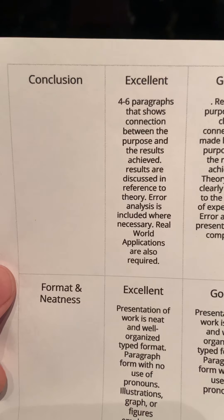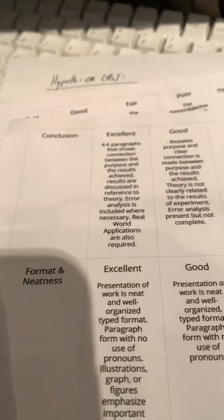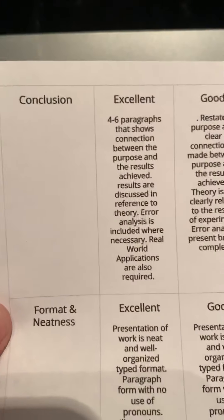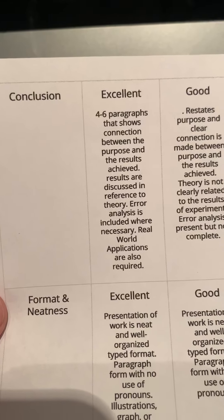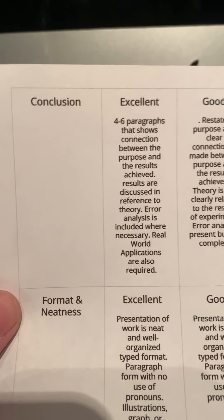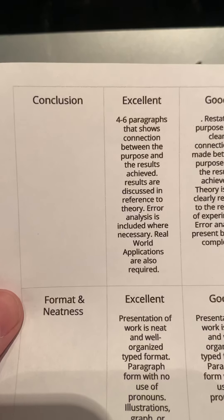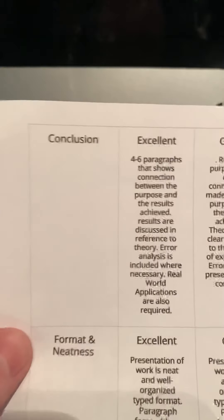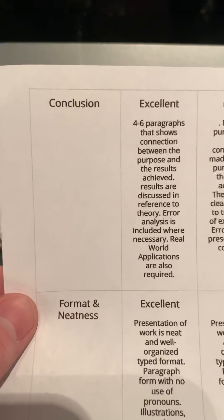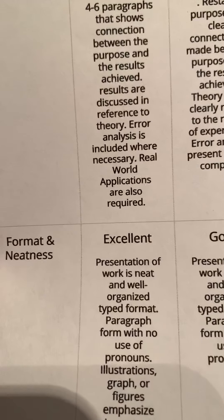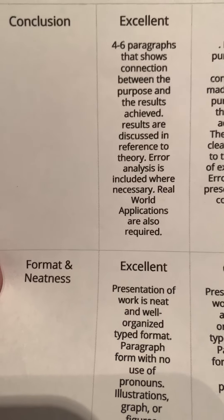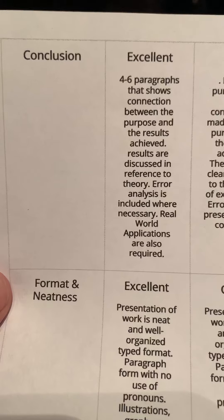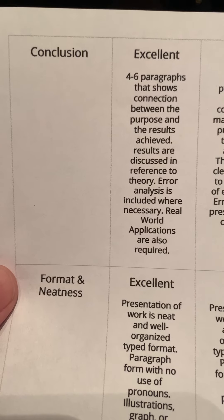For example, if it was precision and accuracy, you might say: first, give a definition — what is precision, what is accuracy — and then tie it back to the lab. Precision was when we were measuring X, Y, and Z; we were sure to get precise measurements, and this is how these connected. Also in your conclusion section, notice there it says real-world applications, and error analysis right above that. So make sure you take time to do that. Again, four to six solid paragraphs is what your conclusion should consist of.